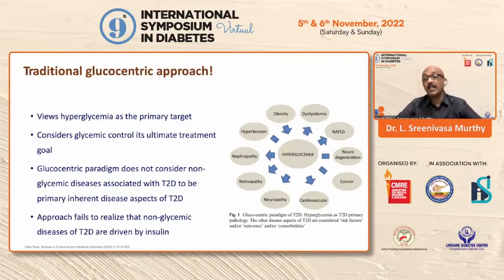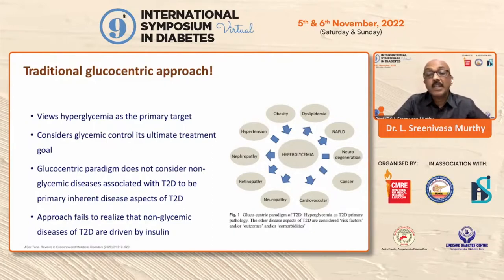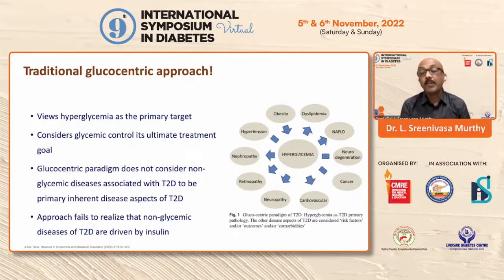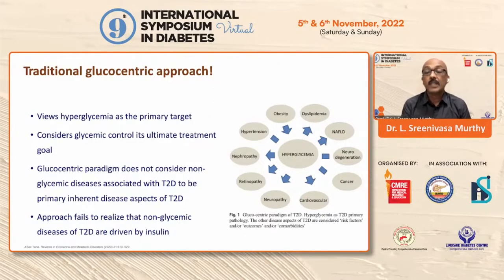The current paradigm in diabetes is glucose-centric, being exclusively categorized by the glycemic characteristics. The glucose-centric paradigm views hyperglycemia as the primary target — the only primary target — which is driven by the resistance to insulin combined with progressive beta-cell failure.